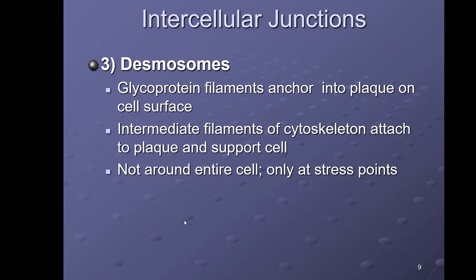Desmosomes are a type of cell-to-cell junction that hold cells together by forming a plaque — basically a large collection of proteins. There are intermediate filaments from the cytoskeleton inside the cell that stick into the plaque and help anchor and support the cell. The plaque also attaches to an adjacent cell, so desmosomes not only help the structure of a cell but also hold cells together.